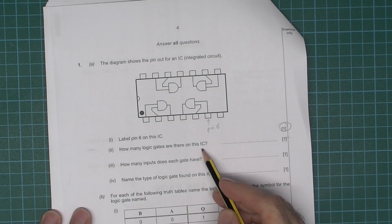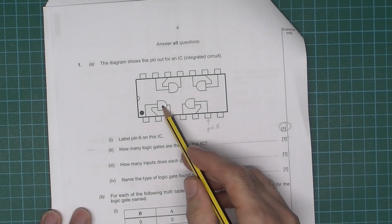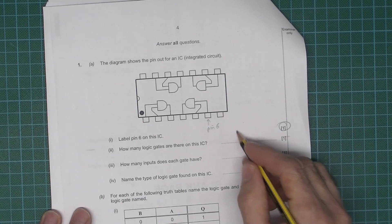How many logic gates are there on the IC? Well hopefully you can see that there's 1, 2, 3, 4, so that should be an easy one to answer.